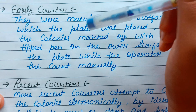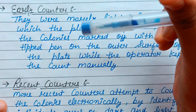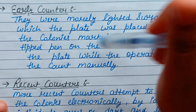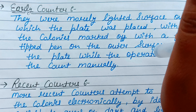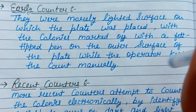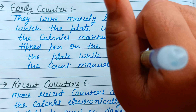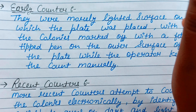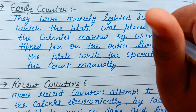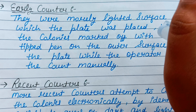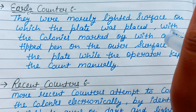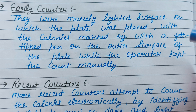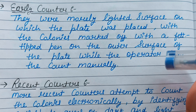The early colony counters had a more lighted surface on which the plate was placed, and colonies were marked with a felt-tipped pen on the outer surface of the plate while the operator kept the count manually. Friends, with manual counting there can also be errors.